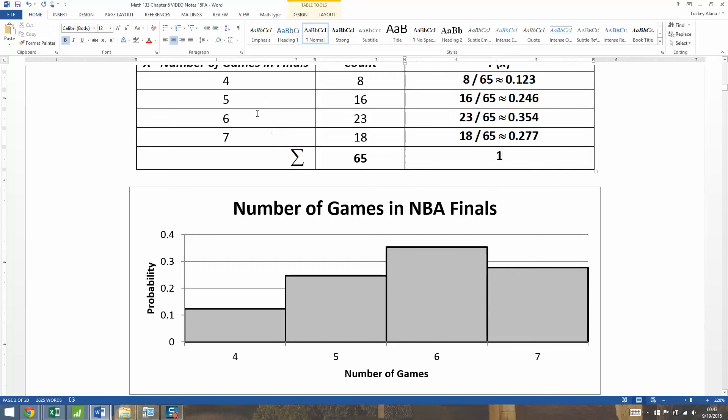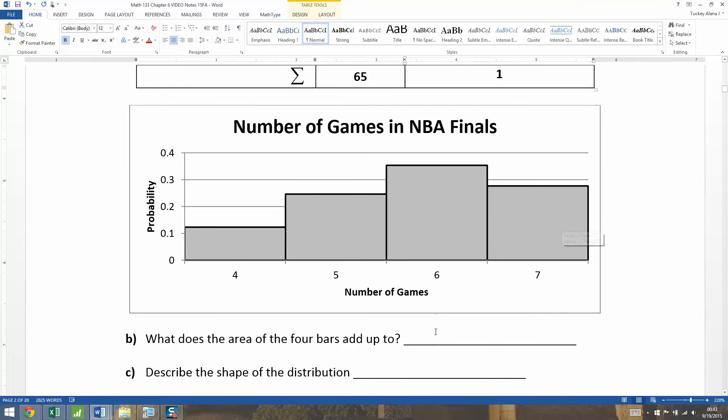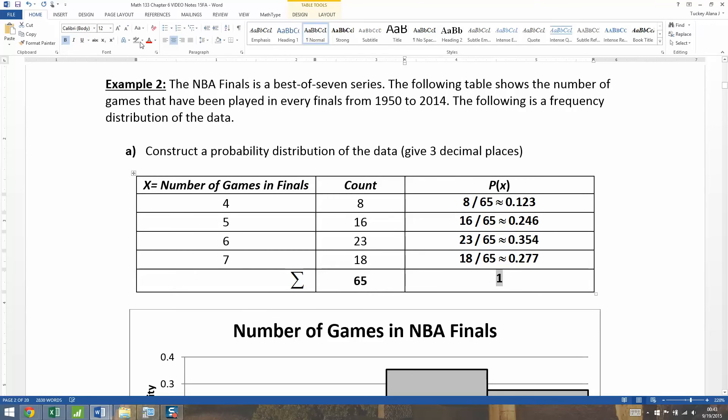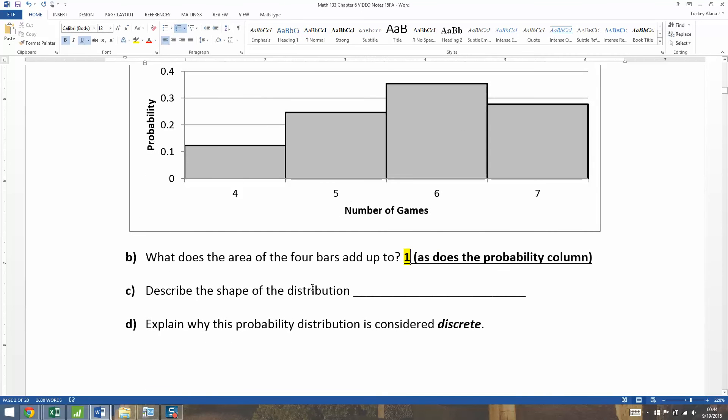Then we make a histogram of it. The x-axis is 4, 5, 6, 7 with the bars touching, and the probability as our y-axis variable. Each of these probabilities becomes the heights of those bars. The area of the four bars, of course, must add up to one, as does the probability column. That probability column has to add up to one, and so do the histogram bars.